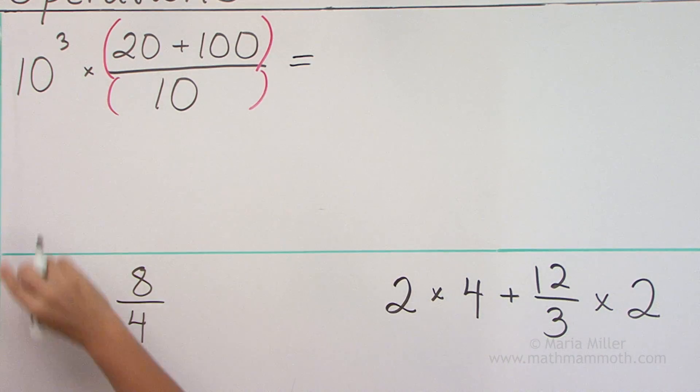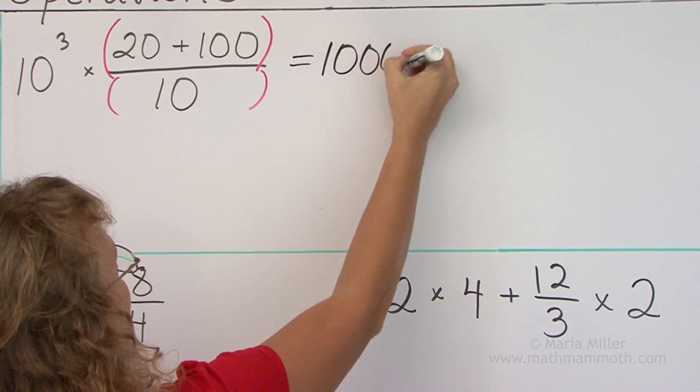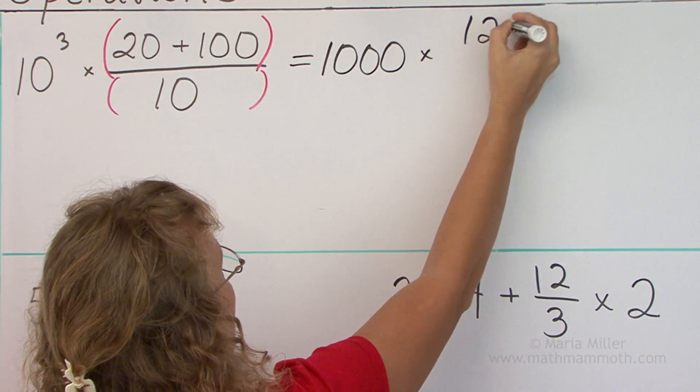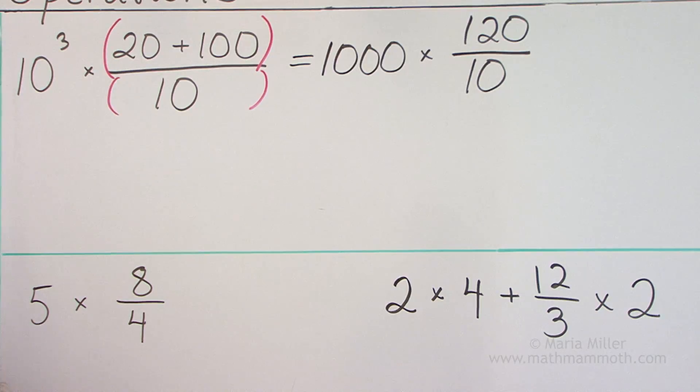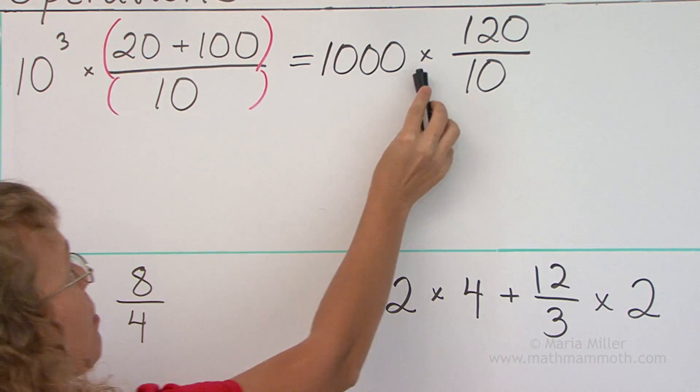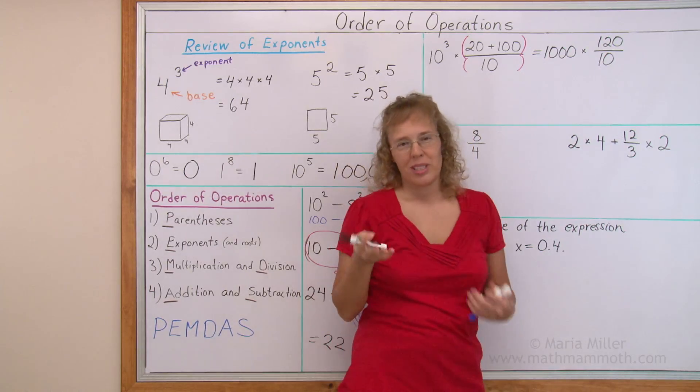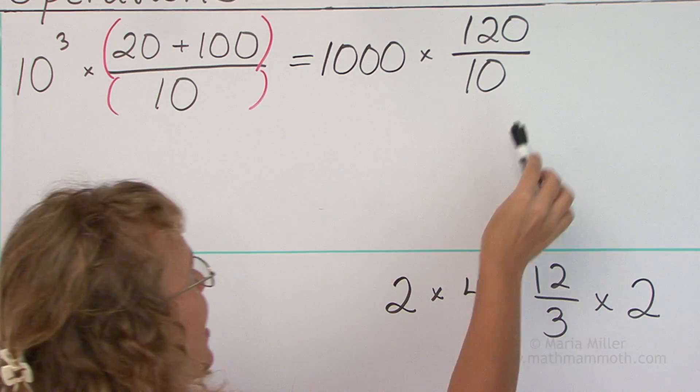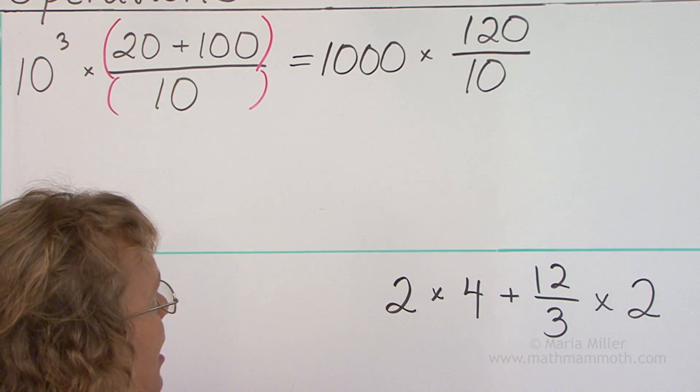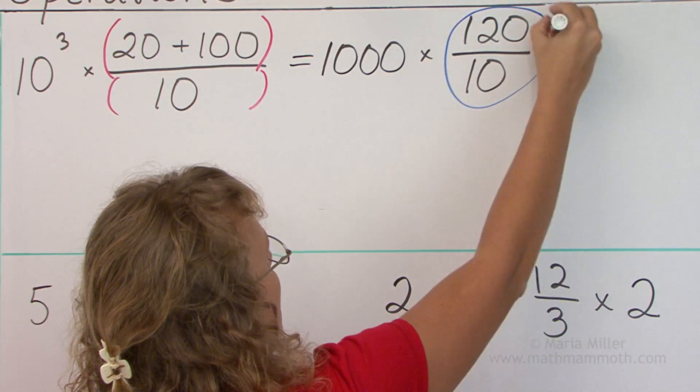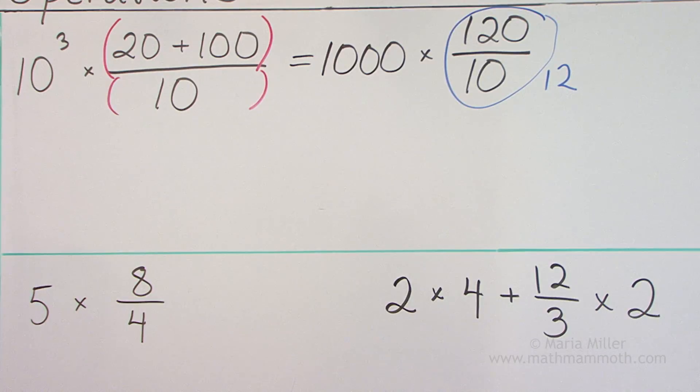And at the same time I will also calculate this. The exponent I get here 1000 and then times, and over here 120 and then over 10. Now I have the situation where there's only multiplication and division. So now I can actually do them in either order. And this one here, if I divide first, I get here 12, right? And so we get 1000 times 12 which would be 12,000.